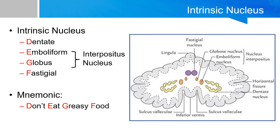Before we move on to the functional classifications, we need to note the intrinsic nuclei of the cerebellum. The cerebellar nuclei sit deep in the cerebellar white matter, and there are four pairs. The mnemonic is 'don't eat greasy food,' standing for dentate, emboliform, globus, and fastigial — with dentate being the most lateral and fastigial being the most medial, as depicted in this picture.